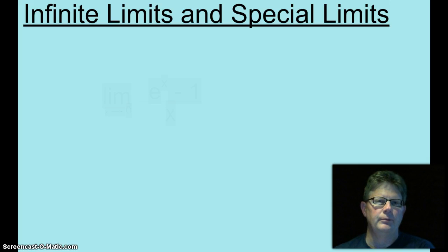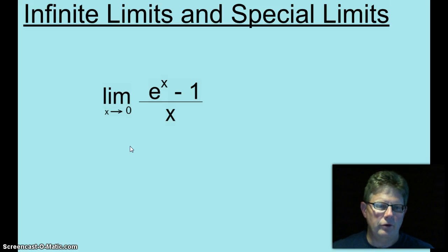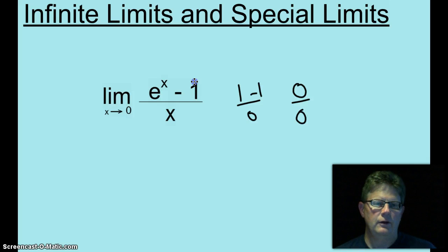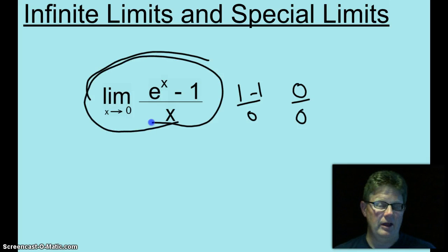Now there are going to be times where algebraic manipulation will just not work. No algebraic shenanigans are going to do the trick. Here's one right now. The limit as x approaches 0 of e to the x minus 1 all over x. When you replace, e to the 0 is 1, 1 minus 1 over 0, 0 over 0. However, there is nothing algebraically that we can do to simplify it. Because that is the case, there are some limits that we will have to memorize.